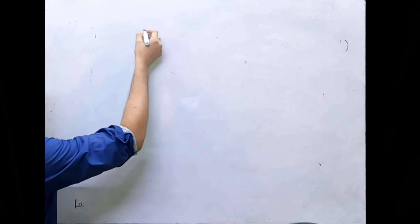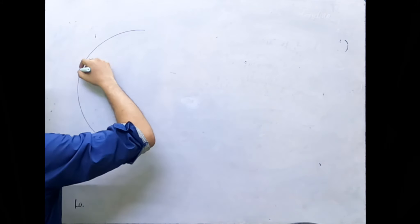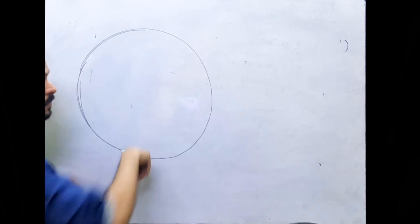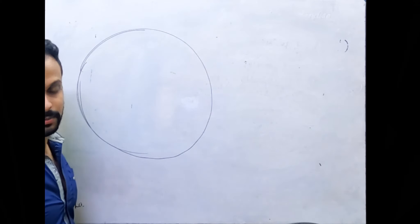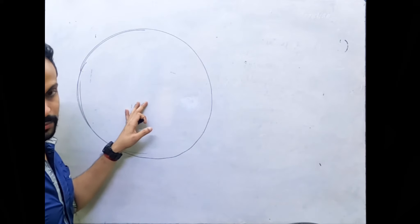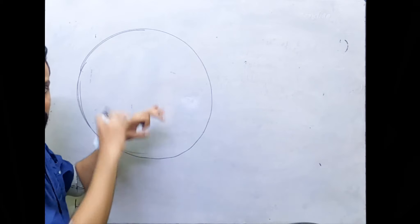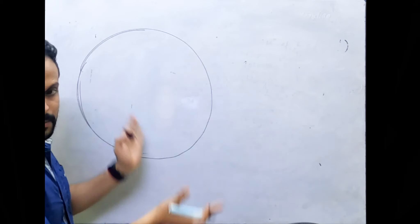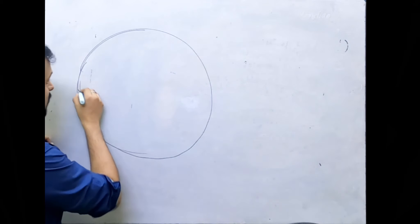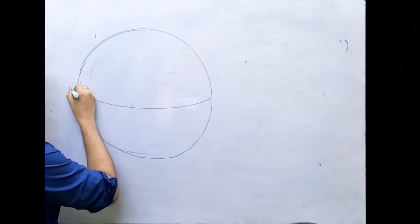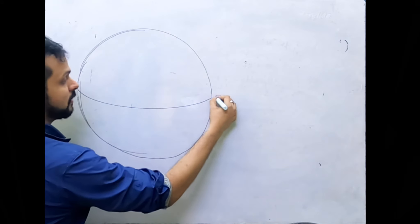Both aircrafts are in the northern hemisphere. Let's draw the diagram. Whenever you draw a diagram, make it a point to draw it as big as possible, because if you draw a small diagram and try to put all these things into it, it becomes a mess. Draw it as big as possible — that will definitely help. This is the equator; let's mark the direction straight away.